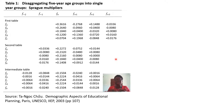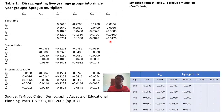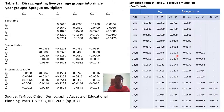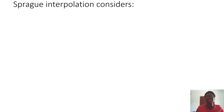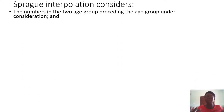There is an original table and a modified form. We are going to use the modified form of the table. Now let's look at fragment interpolation — what you need before you can use the table. First, you need to have the numbers in the two age groups preceding the age group under consideration.